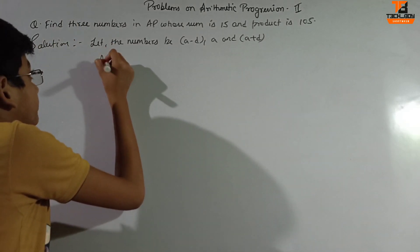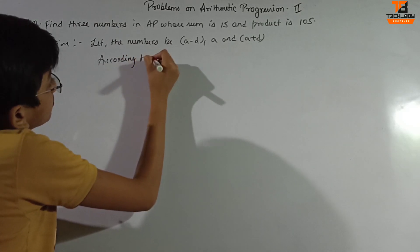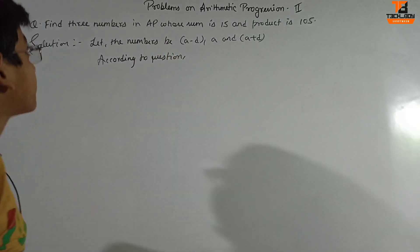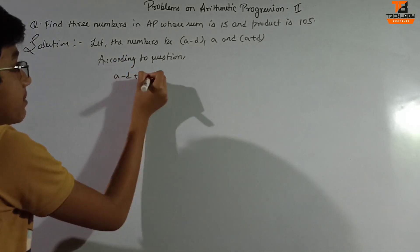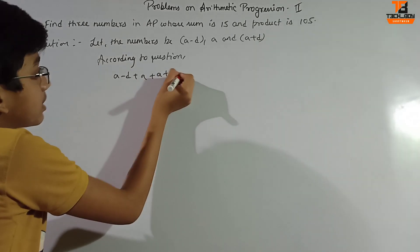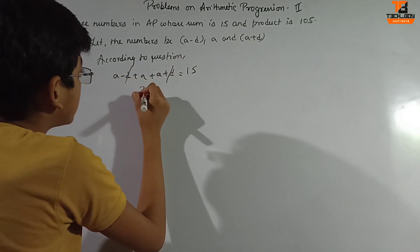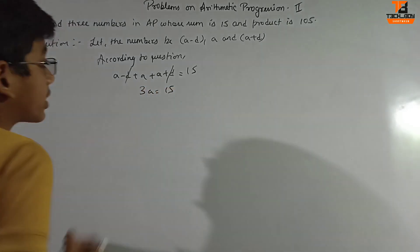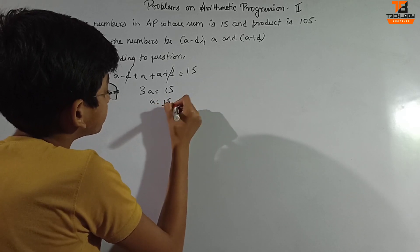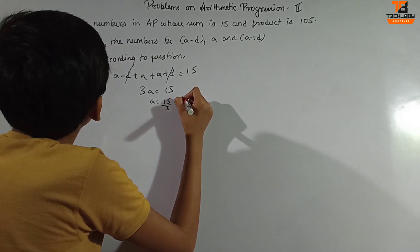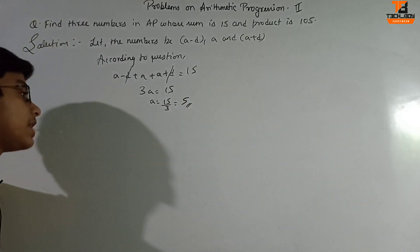According to the question, the sum of the three numbers is 15. So (a−d) + a + (a+d) = 15. The d terms cancel, giving 3a = 15, therefore a = 5.